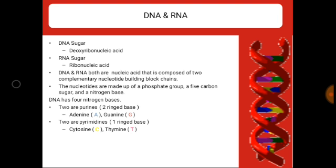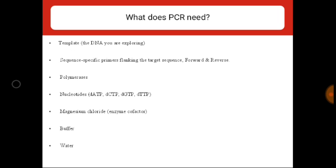With PCR we can amplify DNA and RNA. DNA is deoxyribonucleic acid and RNA is ribonucleic acid. Both are nucleic acids composed of two complementary nucleotide building block chains. Nucleotides are made up of a phosphate group (PO4), a five-carbon ribose sugar, and a nitrogen base. DNA has four nitrogen bases: adenine and guanine are purines (two-ringed), and cytosine and thymine are pyrimidines (one-ringed).